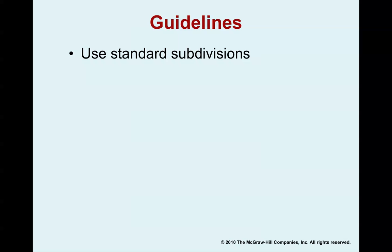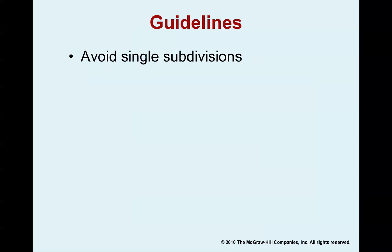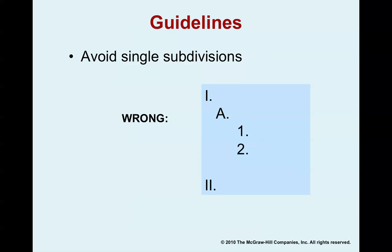Another tip is to use standard subdivisions, just like outlining an essay. You can use the traditional scheme: main points are marked with Roman numerals. Each time you subdivide a point, you indent. Each heading should have at least two subdivisions or none at all - for every heading marked A, there should be a B. That's the mistake in this example: they have an A with sub-points one and two, but there's no B.